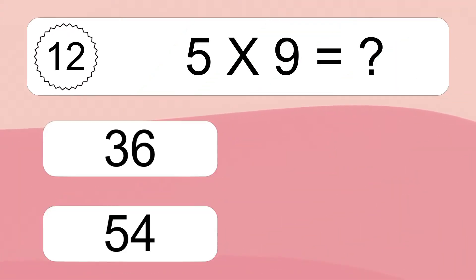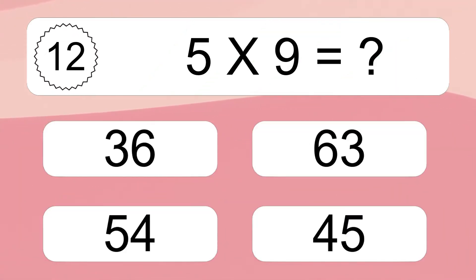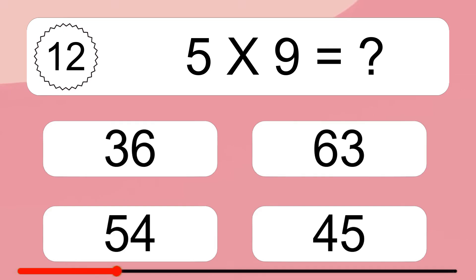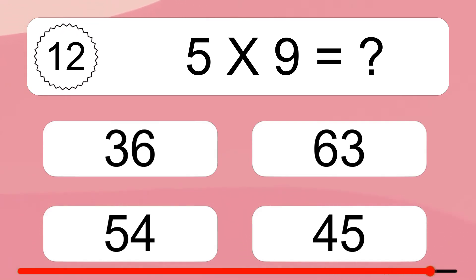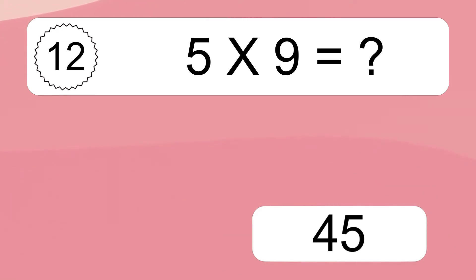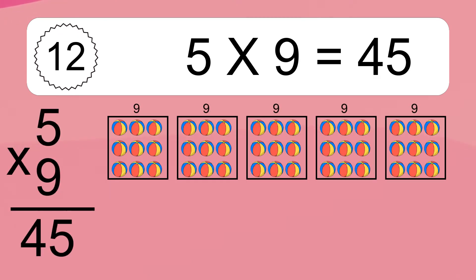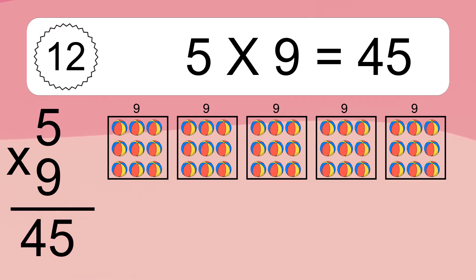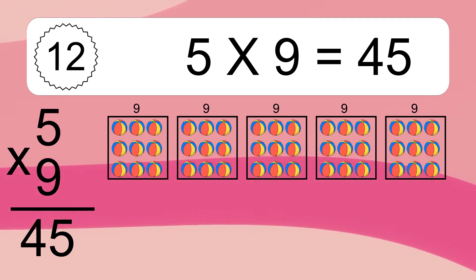Five times nine equals what? Five times nine equals forty-five. We have five boxes and each box has nine colorful balls inside. If you count all the balls in all the boxes together, you will have five times nine balls. This equals forty-five balls.